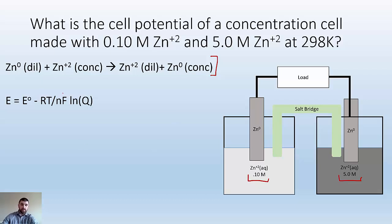I know E equals E naught minus RT/nF ln Q. My E naught is zero because it's a concentration cell. R is a constant, temperature is given. I got to figure out how many electrons are being transferred. It goes from zero to +2, so there's 2 electrons involved. F is a constant.